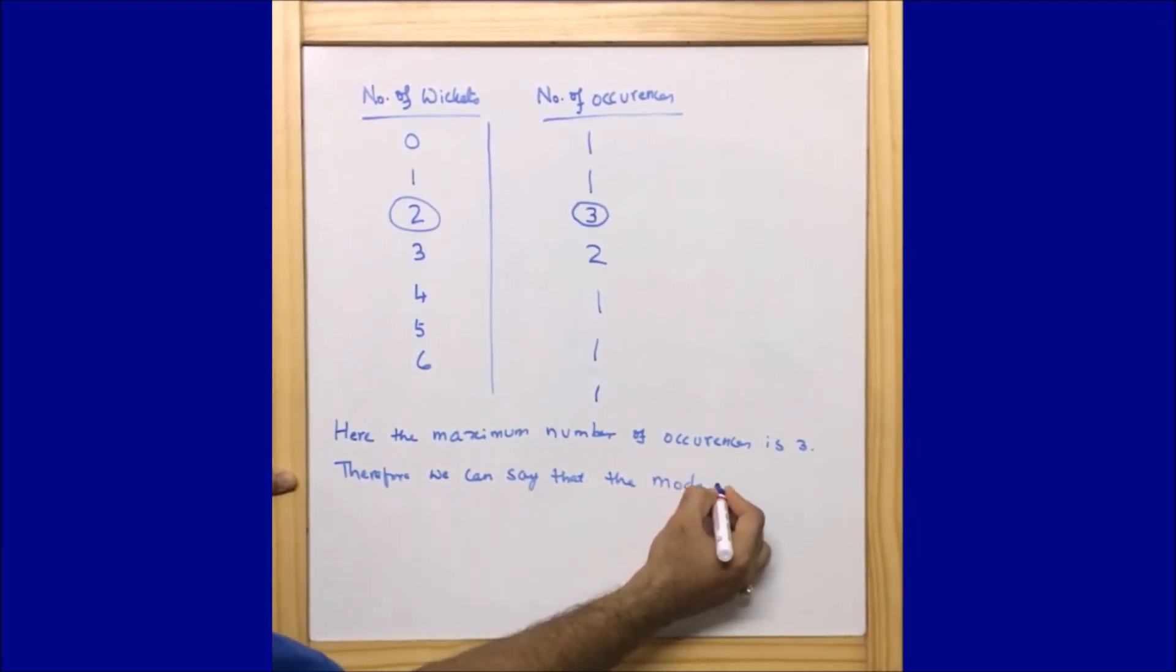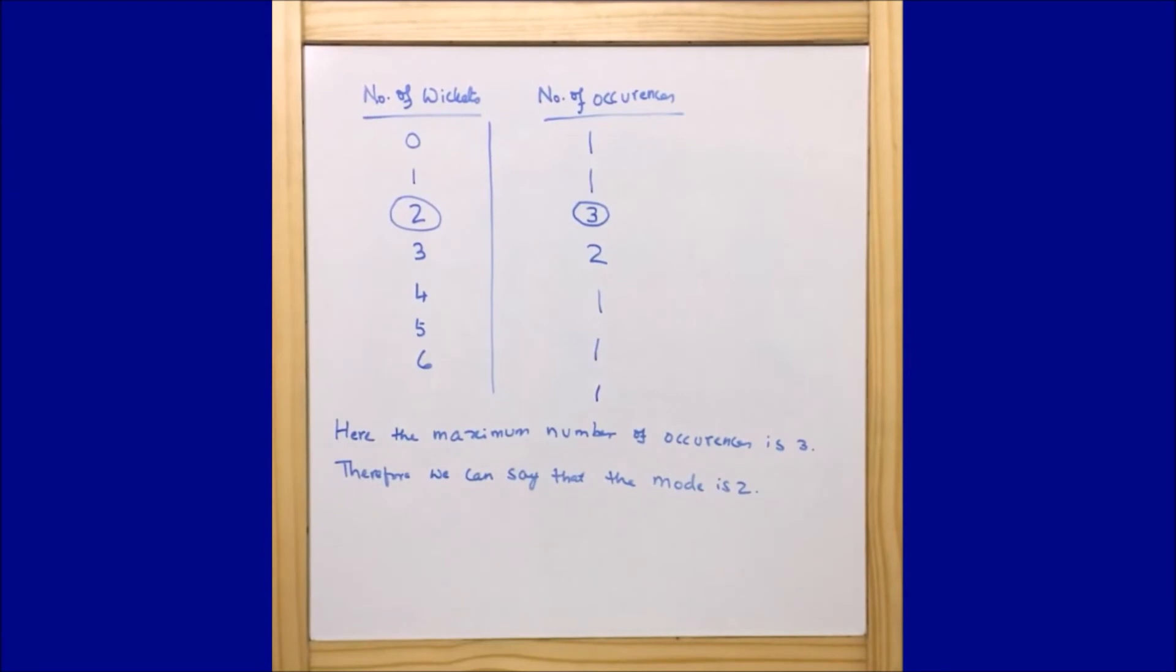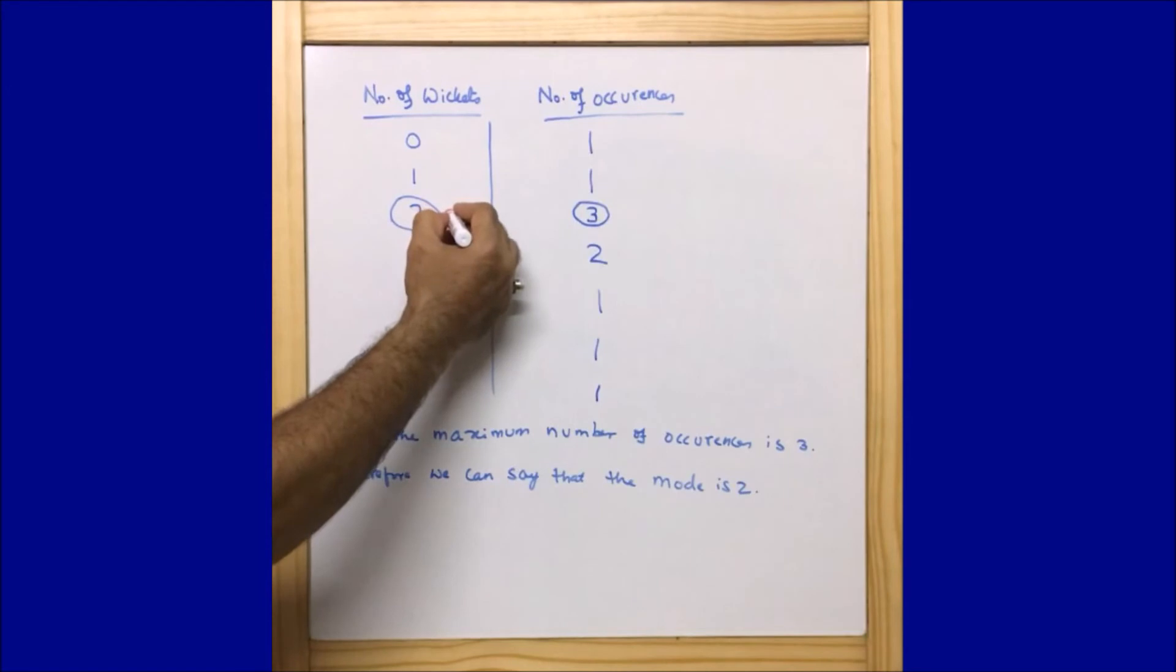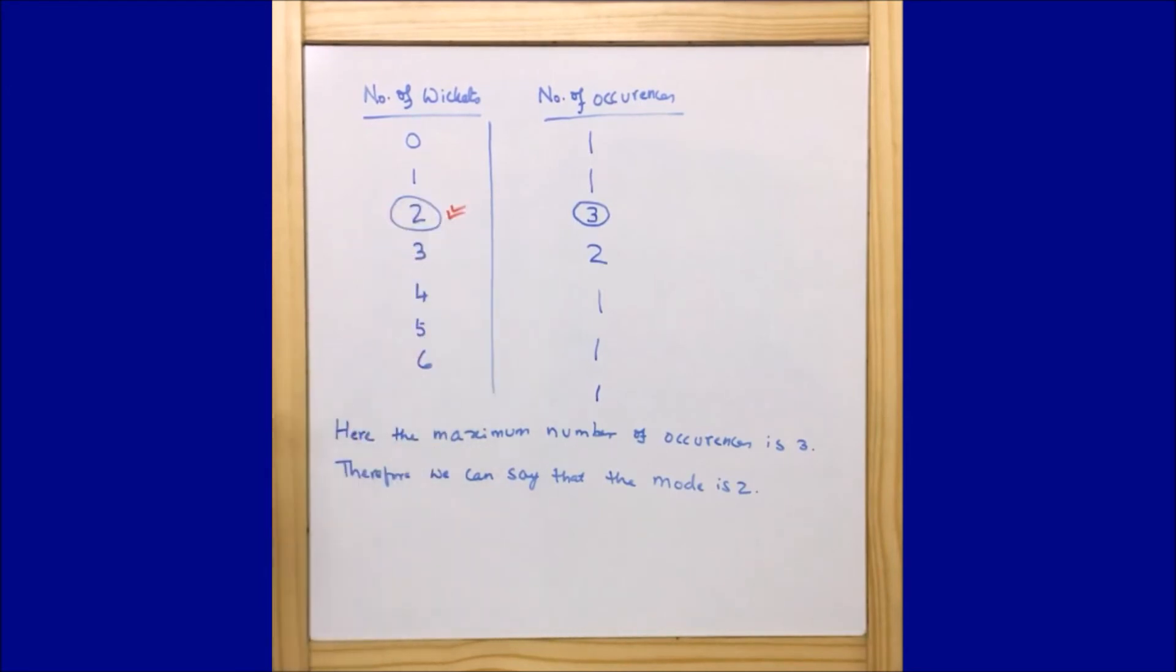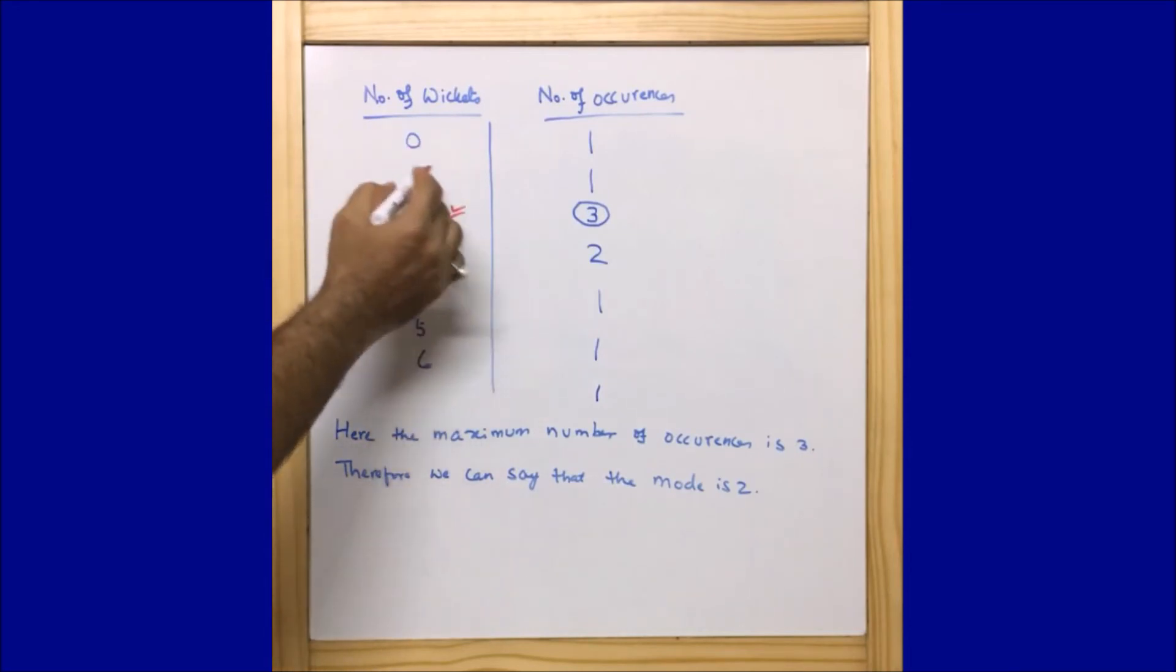Hope you understood this calculation. This is very simple. We just need to understand that mode for ungrouped data is nothing but the most repeated value that we get. If you analyze the ungrouped data, then you will see that in our case...